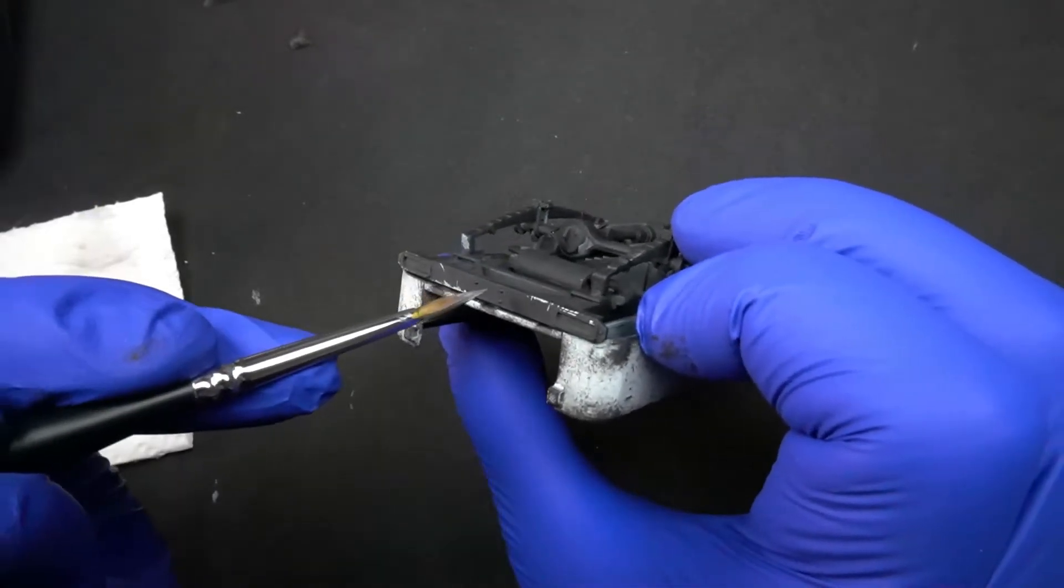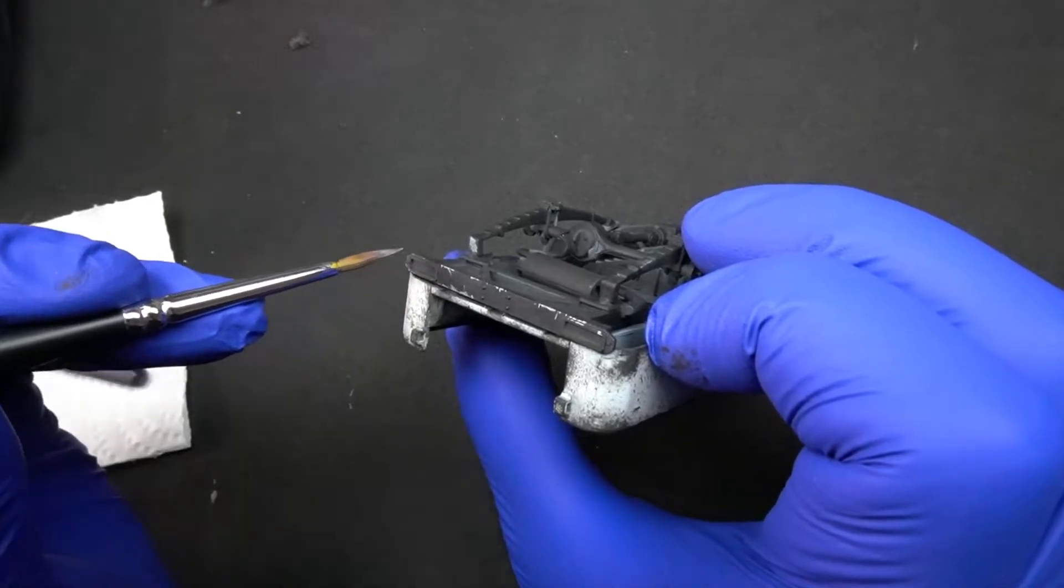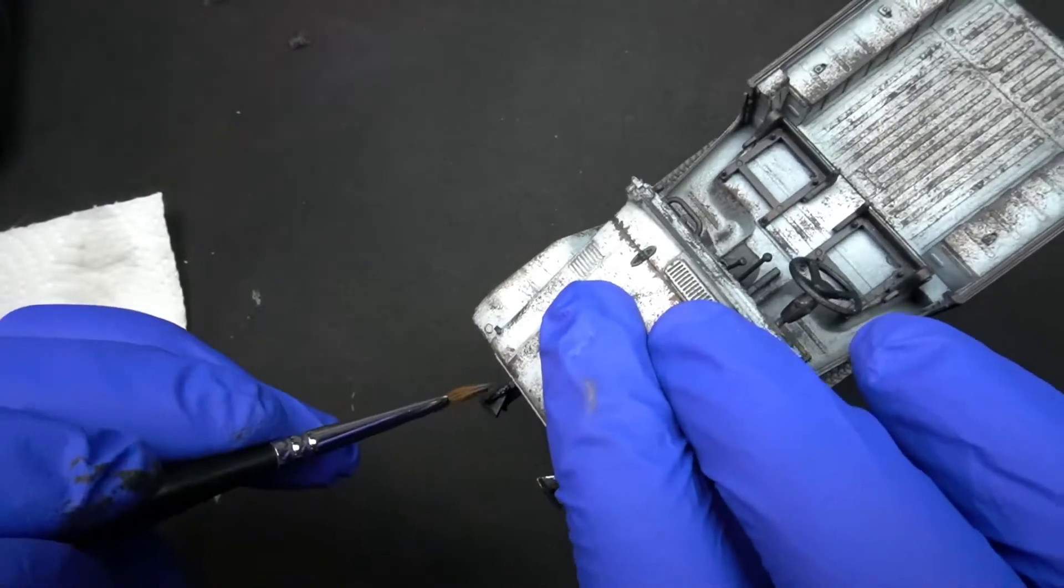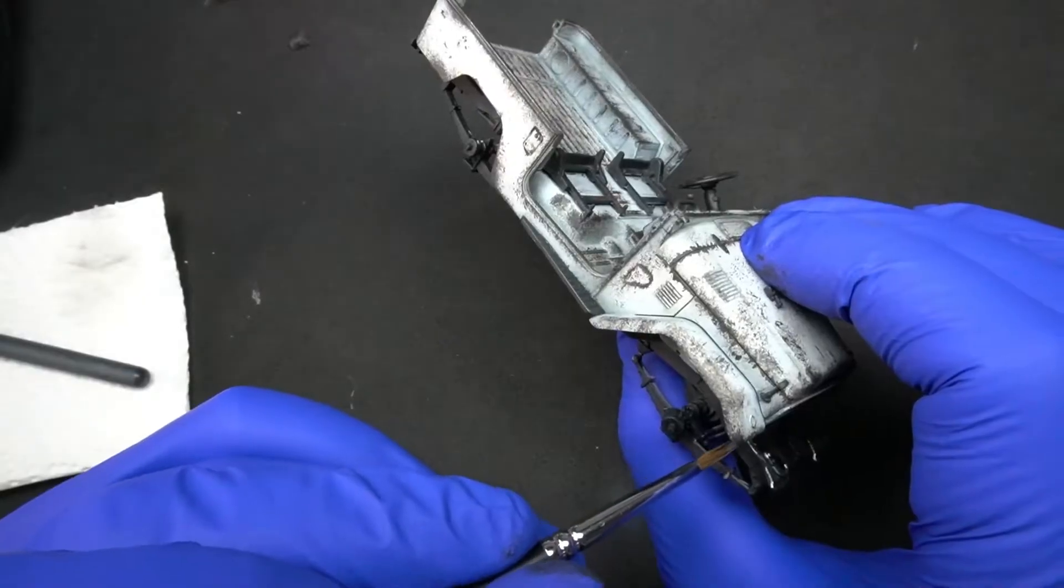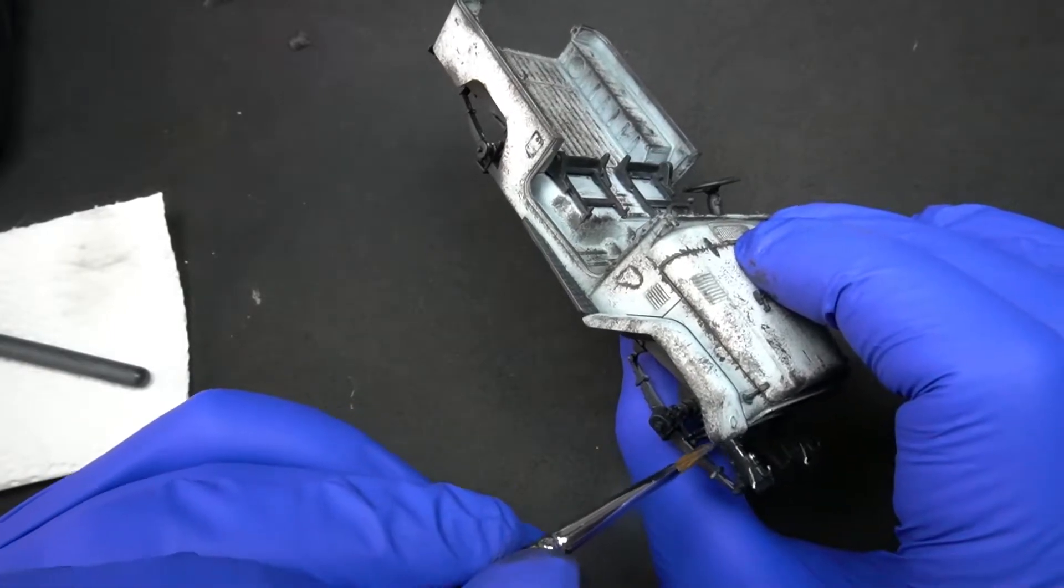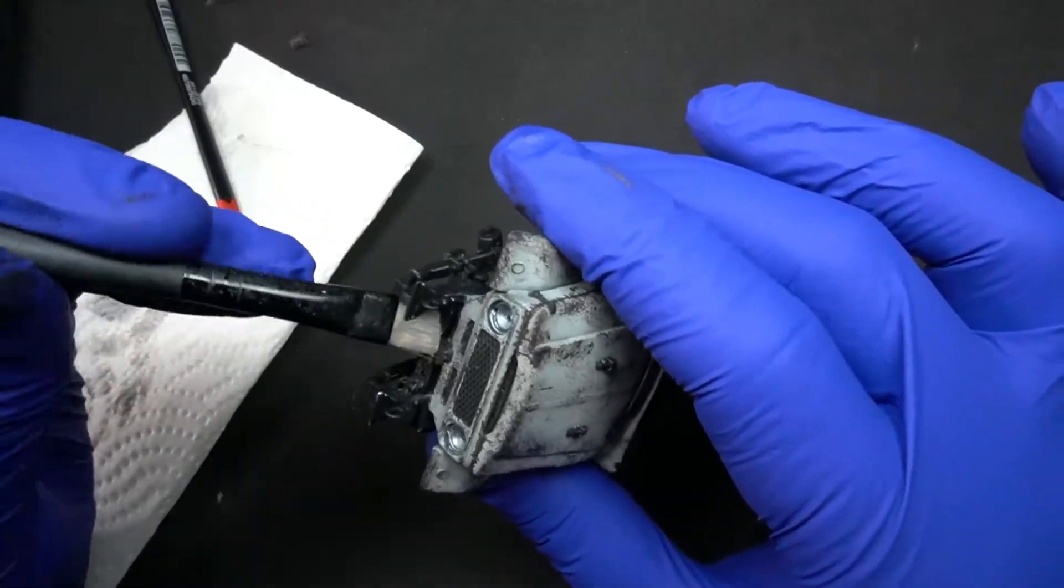And the same can be said about the bumper. The sides and the corners of the bumper are certainly going to be deteriorated. Just like the suspension of the vehicle.